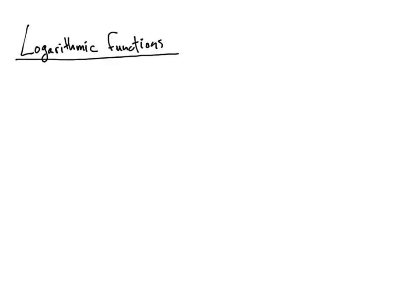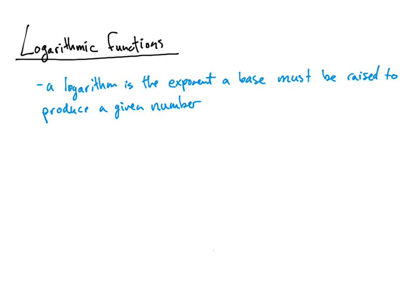In this video I'll be going over logarithmic functions. First let's talk about what a logarithm is. A simple definition: a logarithm is the exponent a base must be raised to in order to produce a given number. For example, if we have 5 raised to some exponent equal to 25, the logarithm tells us what that exponent is. The number inside the exponent is 2, and we use the logarithmic function to find that value.